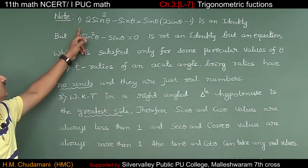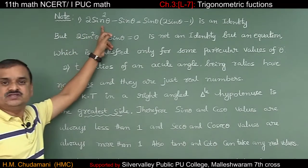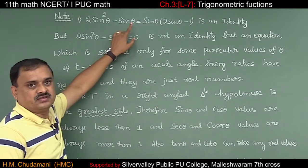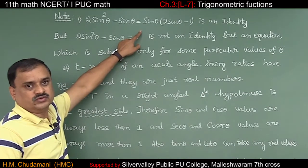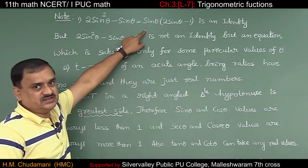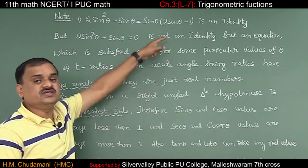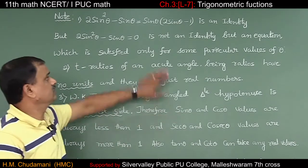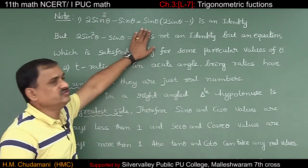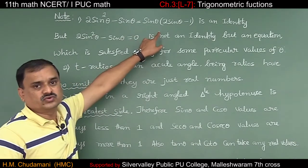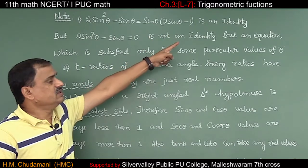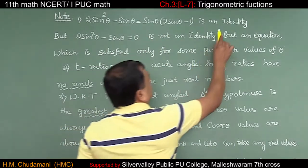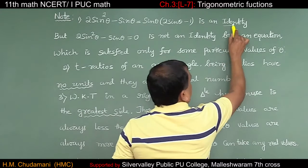First note: 2 sin²θ − sin θ is equal to sin θ(2 sin θ − 1). If I take sin θ common, then sin θ(2 sin θ − 1) is an identity.